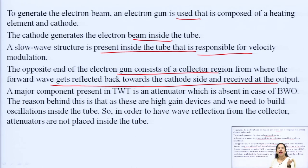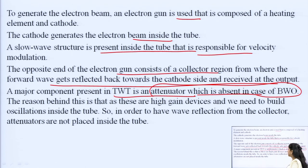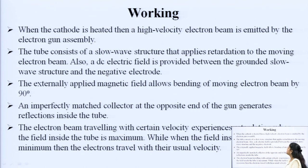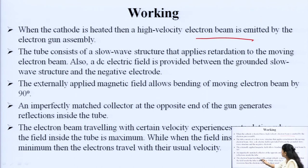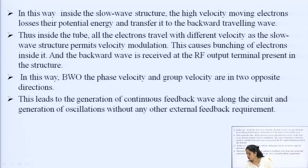Since reflection occurs and feedback is provided — and we know that in all oscillator components feedback is essential for providing oscillations — the major component present in TWT is an attenuator, which is absent in the case of BWO. The attenuator in TWT is responsible for avoiding oscillations. In BWO, the attenuator is not present so as to cause oscillation to occur. Velocity modulation takes place via the slow wave structure inside the tube — when the field inside the tube is maximum, the electron beam experiences retardation; when the field is minimum, electrons travel with their usual velocity.